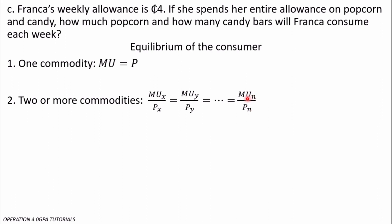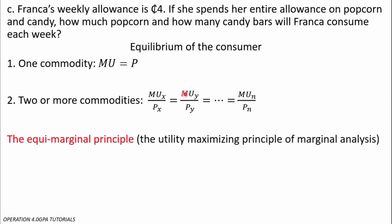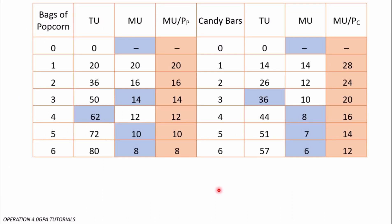This is also called the marginal utility-maximizing principle of marginal analysis. In our question, we have marginal utility of popcorn over price of popcorn should equal marginal utility of candy bars over price of candy bar. We are going to locate in the table where the marginal utility per price for popcorn equals the marginal utility per price for candy.